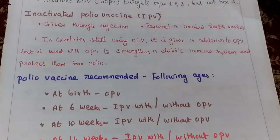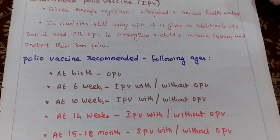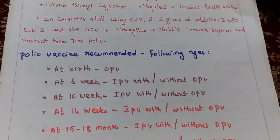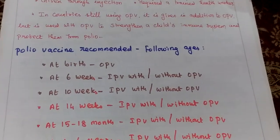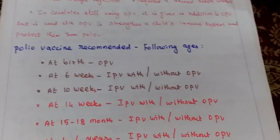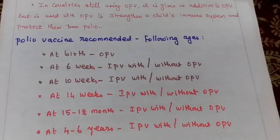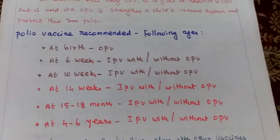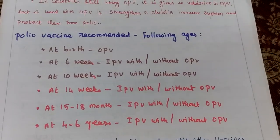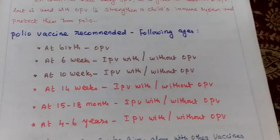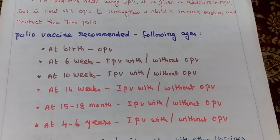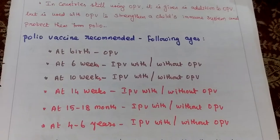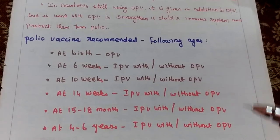The recommended polio vaccine schedule is: at birth, then at 6 weeks, 10 weeks, 14 weeks, then 15 to 18 months, and at 4 to 6 years. Inactivated polio vaccine may be given with or without oral polio vaccine. These are the recommended schedules.